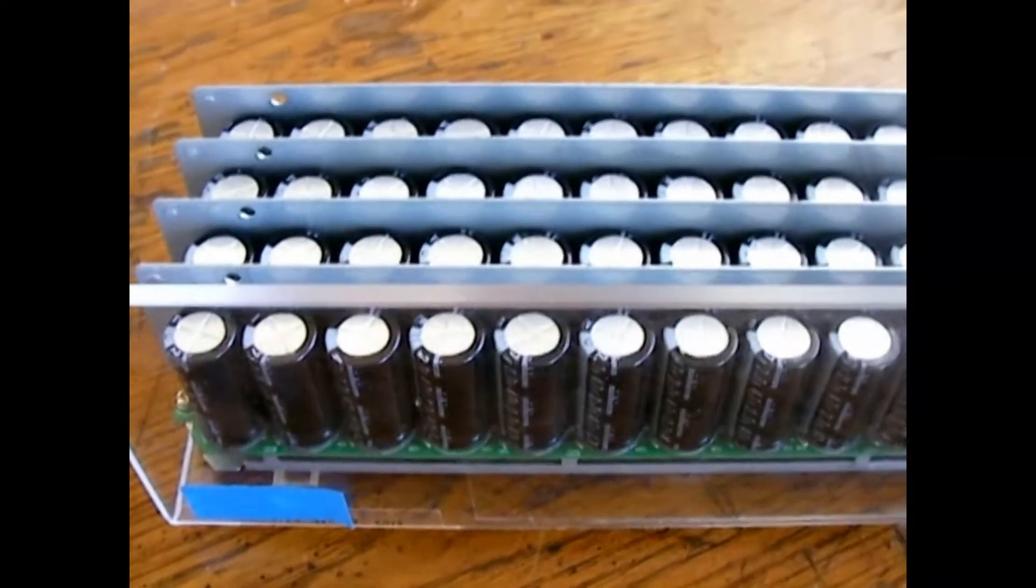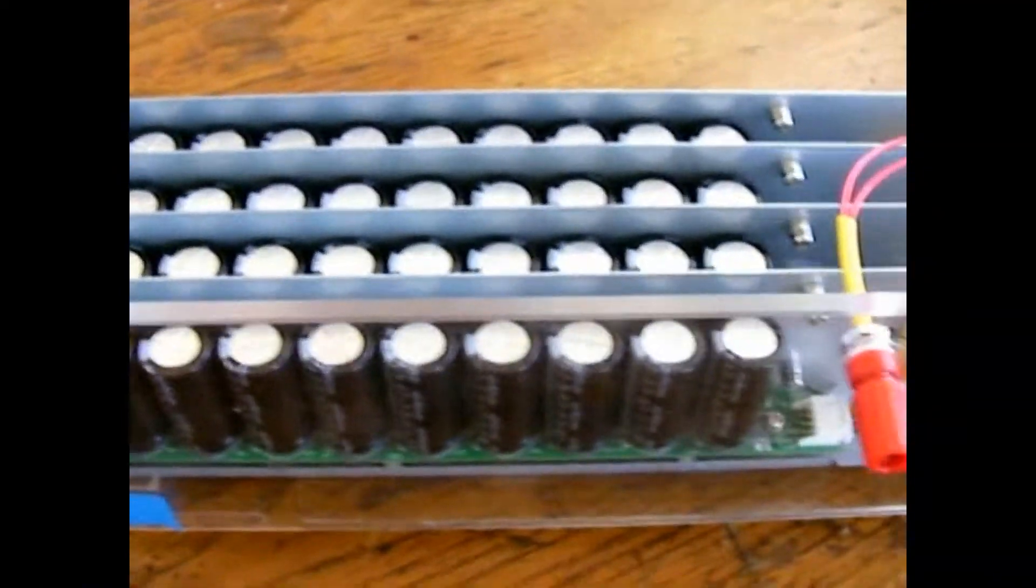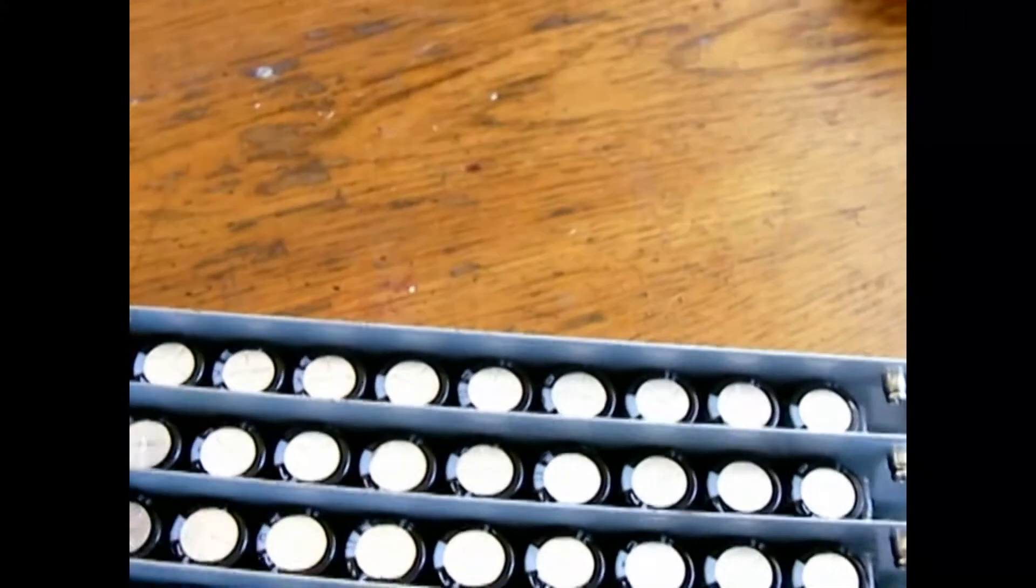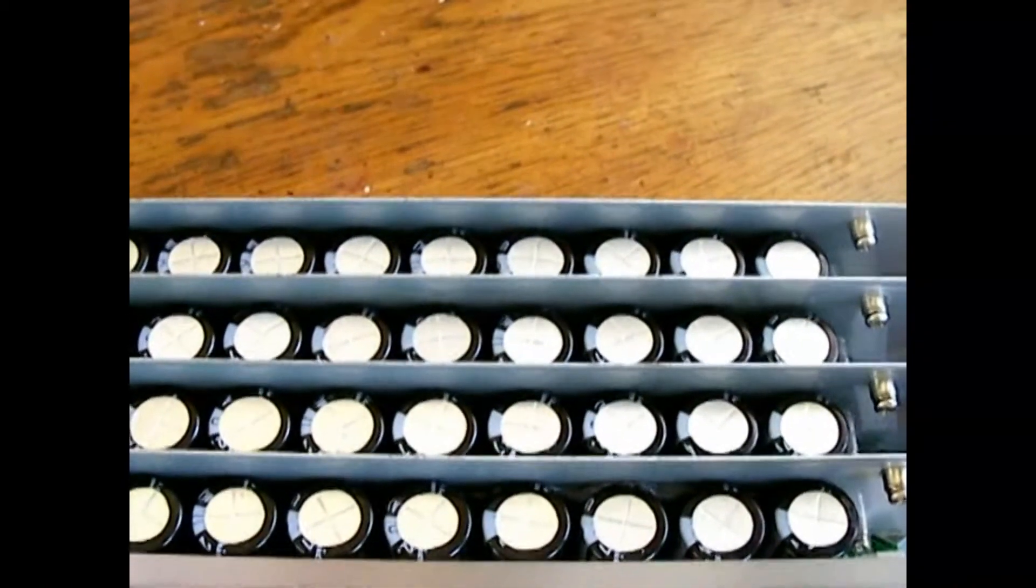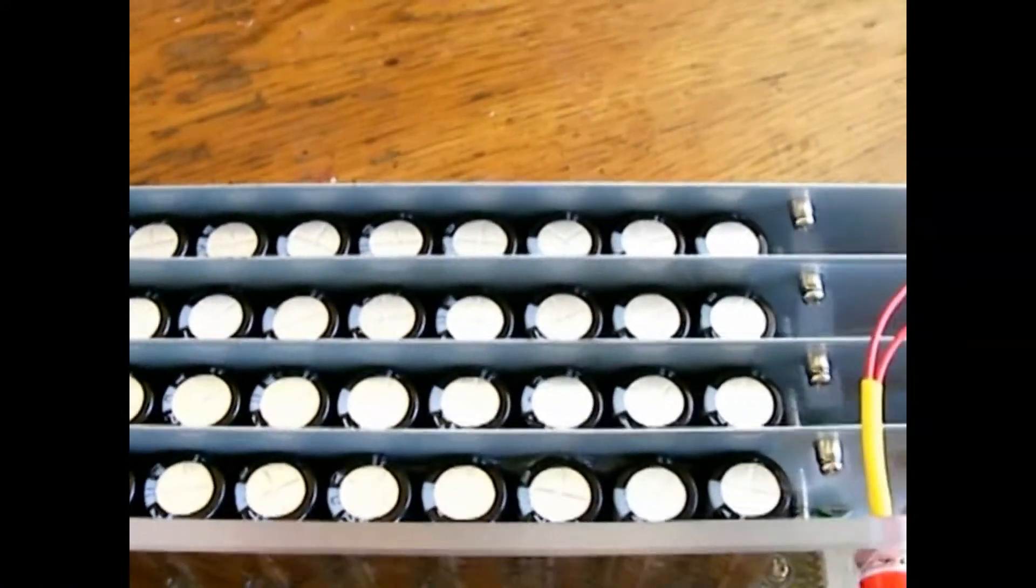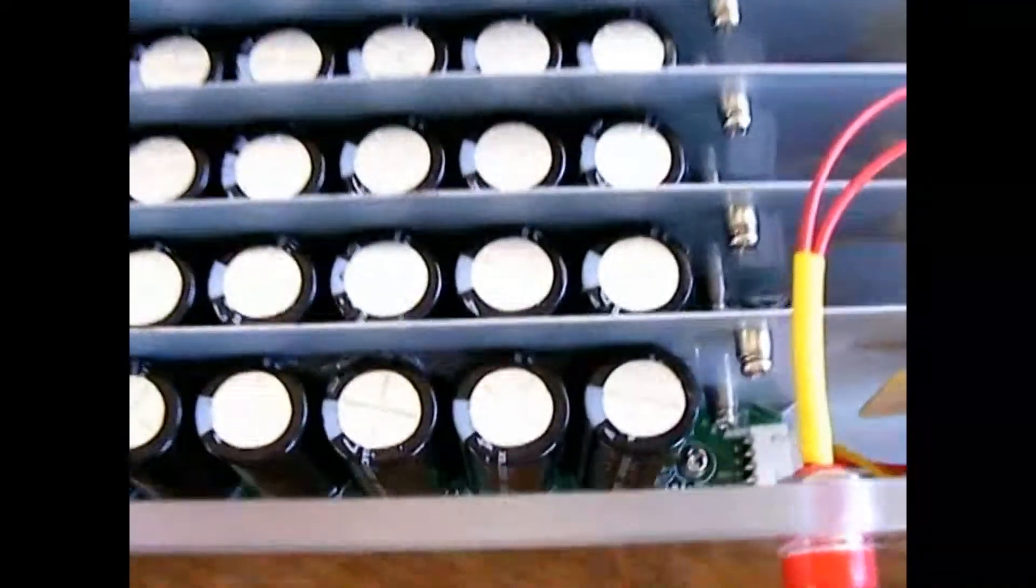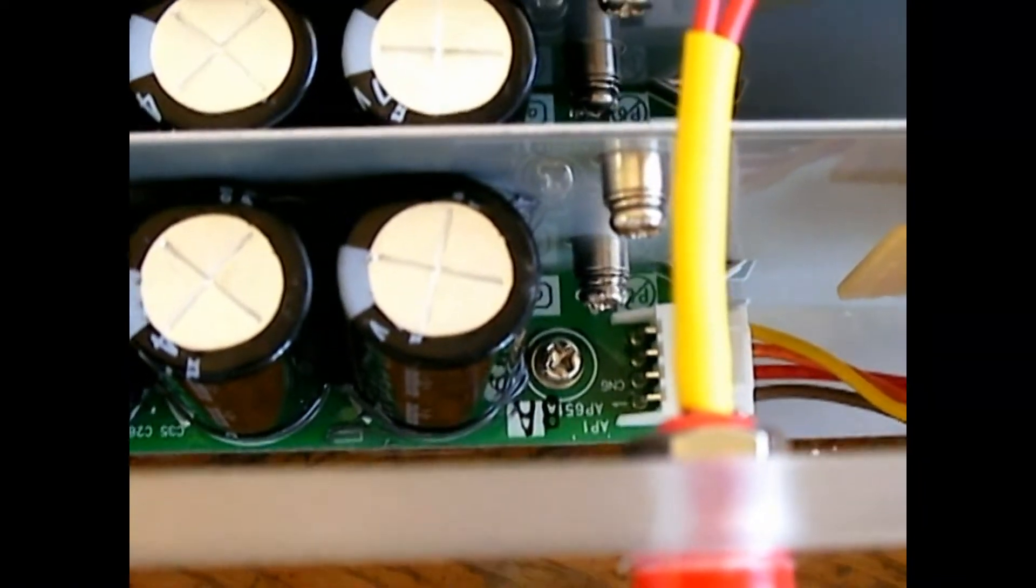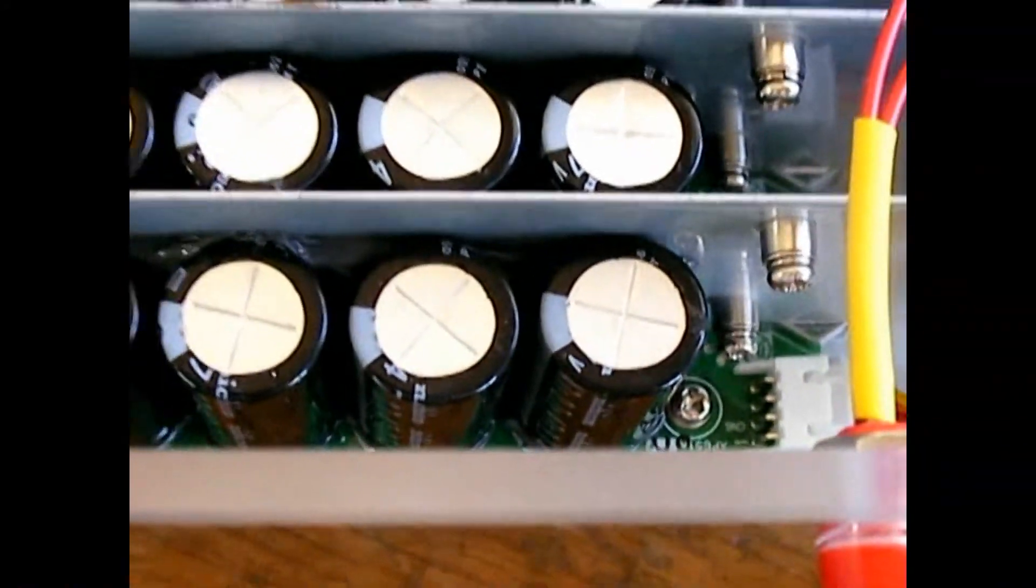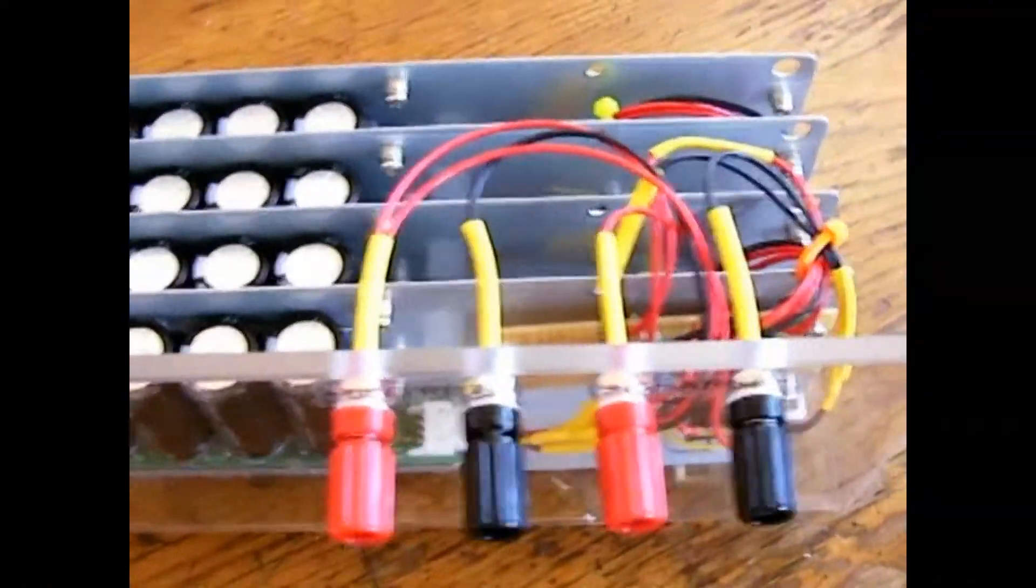Basically, each bank is 12 volts and they're hooked up in series. The good thing when I bought this is that the capacitors were already hooked up in a way where each capacitor is equalized already in its circuit. As shown over here—let me see if I can zoom into that—it's got its own circuits already there, and I don't have a problem charging it.